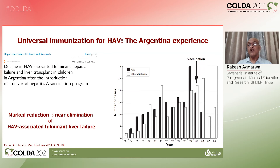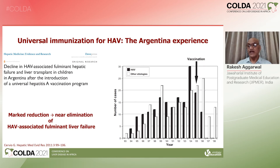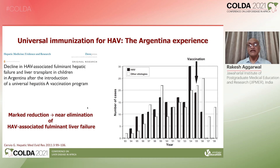In Argentina, in one hospital from 1993 to 2004, they noticed a large increase in the incidence of fulminant hepatic failure due to hepatitis A, because of a change in endemicity from high to intermediate. Other causes of liver failure are shown in white bars and due to hepatitis A in black bars. When vaccination against hepatitis A with one dose at one year of age was introduced in 2005, within one and a half to two years, hepatitis A disease was virtually eliminated — and that is what can be achieved.